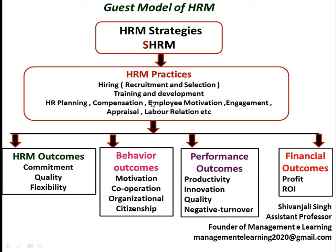The core functions of HR include HR planning, compensation, employee motivation and engagement, appraisal, and labor relations. The HR manager links strategy with HRM practice — the core functions of HR — which gives results in the form of outcomes: HRM outcomes such as commitment, quality, flexibility; behavioral outcomes such as employee motivation and cooperative organizational citizenship; performance outcomes such as productivity, innovation, quality, and turnover; and financial outcomes such as profit and ROI.